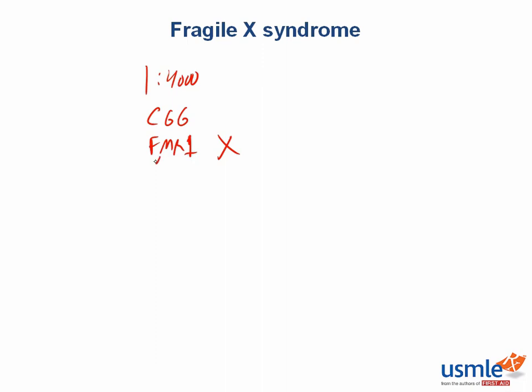This trinucleotide expansion ultimately results in increased methylation of the gene, which decreases expression of the gene and also affects the chromosome structure, which gives it a fragile appearance on microscopy.